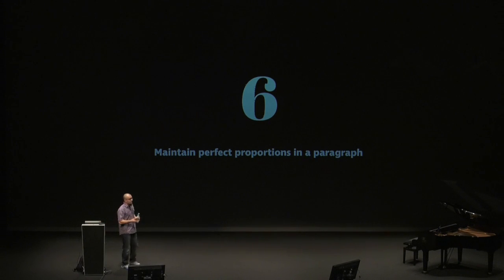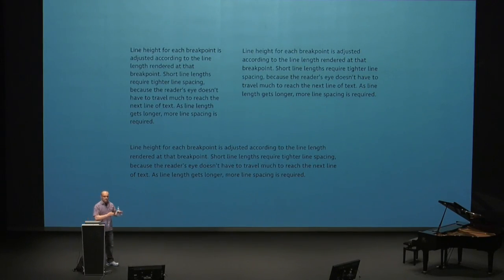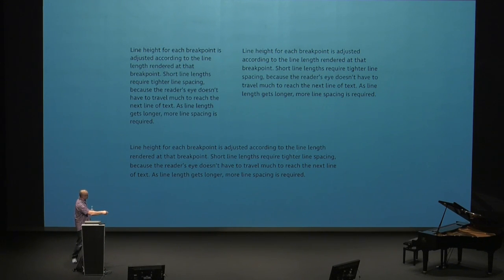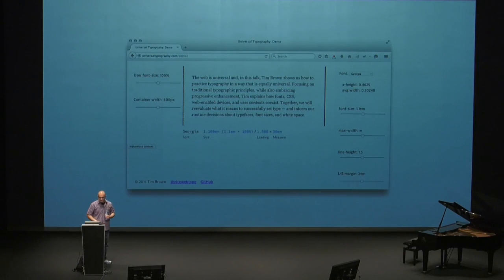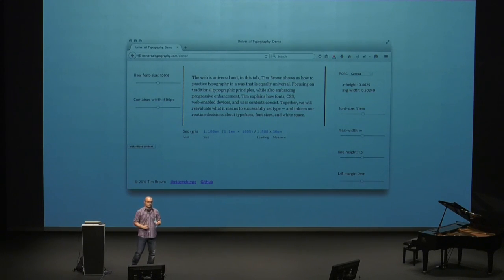Number two: maintain perfect proportions in a paragraph. The longer the line, the more line spacing you require between lines so the eye can find the next row. When you have a really small screen width, you have to compress the text so you don't end up with an itemized list instead of a paragraph. A really cool tool to help with that is universaltypography.com/demo. When you move the sliders, it turns green or red whenever you hit the edge of what's acceptable.